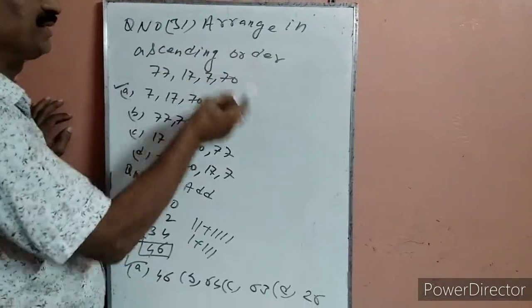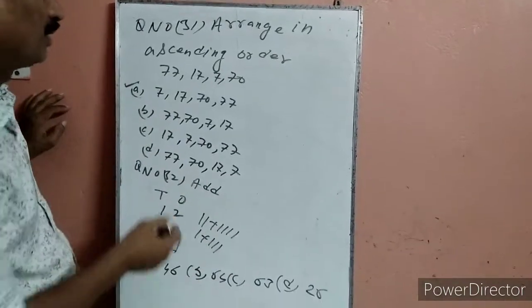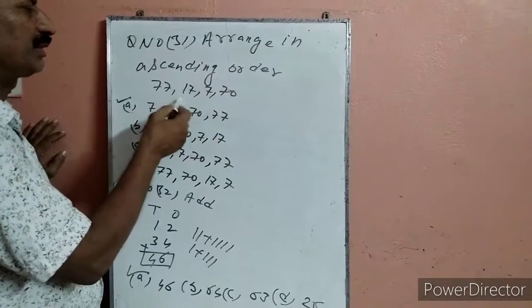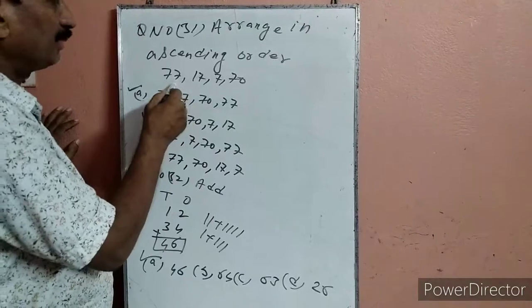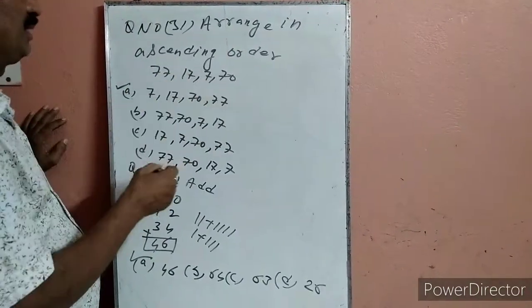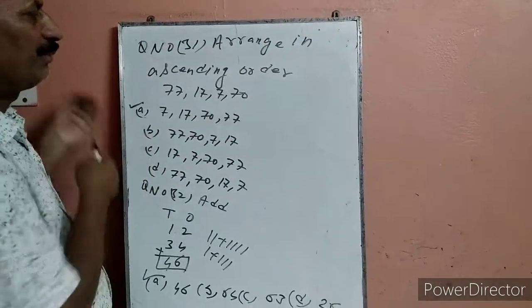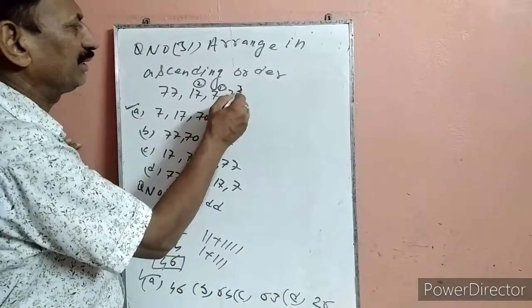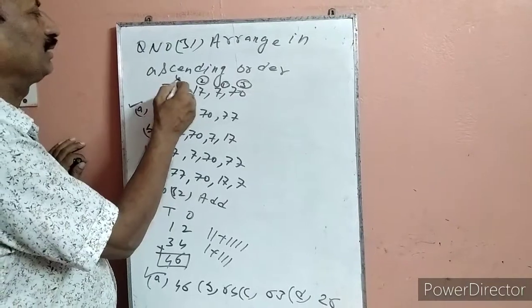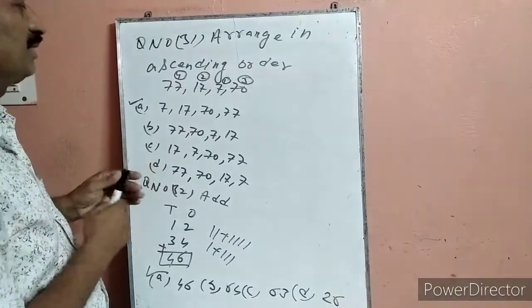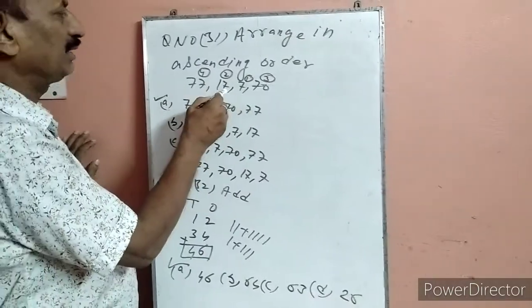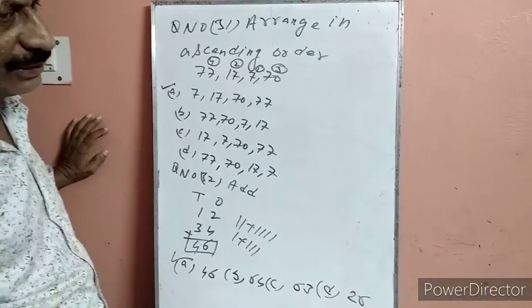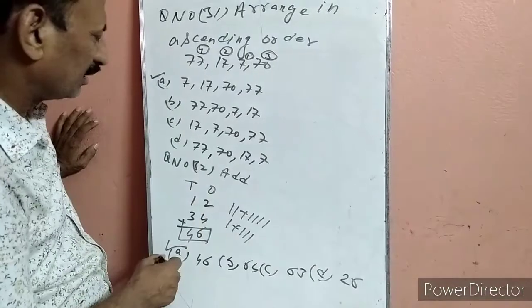Question 31: Arrange in ascending order — छोटे से बड़े. सबसे पहले सबसे छोटा, उसके बाद उसका बड़ा, फिर उसका बड़ा, आखिर में सबसे बड़ा. 7, 17, 77 — पहले option में टिक कर दिया. पहले option में हमने लिख दिया, छोटे से बड़े.